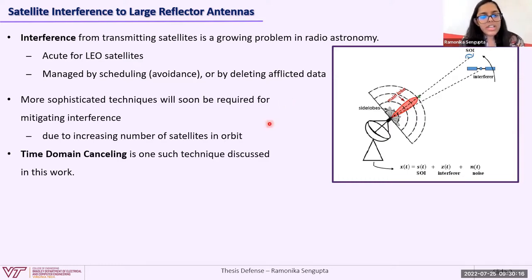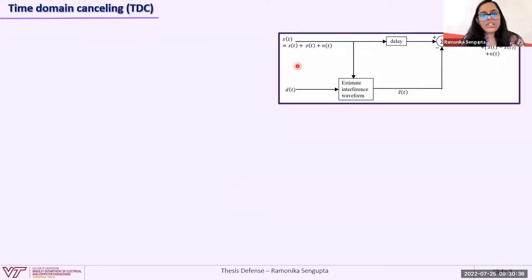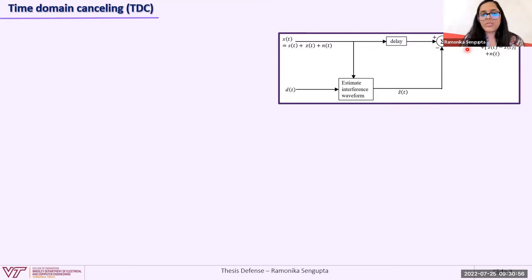Due to the increasing number of satellites in orbit, more sophisticated techniques will soon be required for mitigating interference, because it might become difficult to avoid this problem by scheduling observations, or there may be too much data to delete. Time domain cancelling is one such technique discussed in this work. In this block diagram for time domain cancelling or TDC, we have the signal from the antenna X, compared to a reference signal D which contains the best possible information on the interference Z.